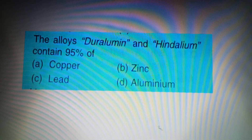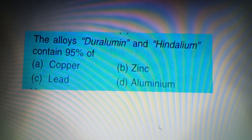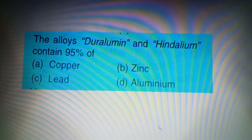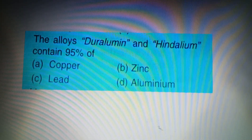Your next question: The alloys Duralumin and Hindolium contain 95% of — Option A: Copper, Option B: Zinc, Option C: Lead, Option D: Aluminium. The answer to this question is Option D: Aluminium.